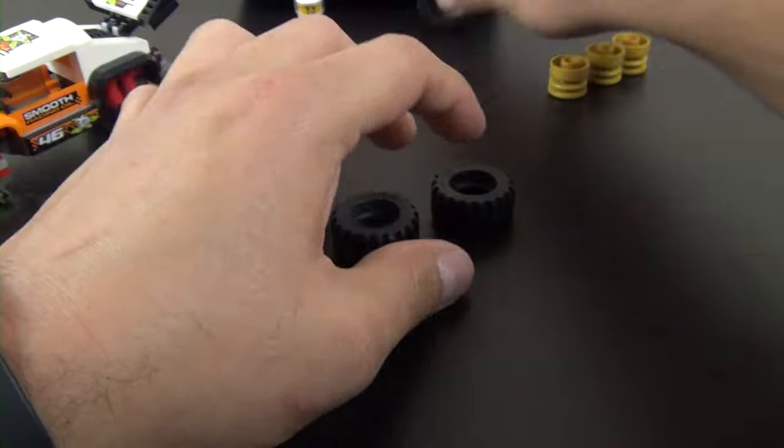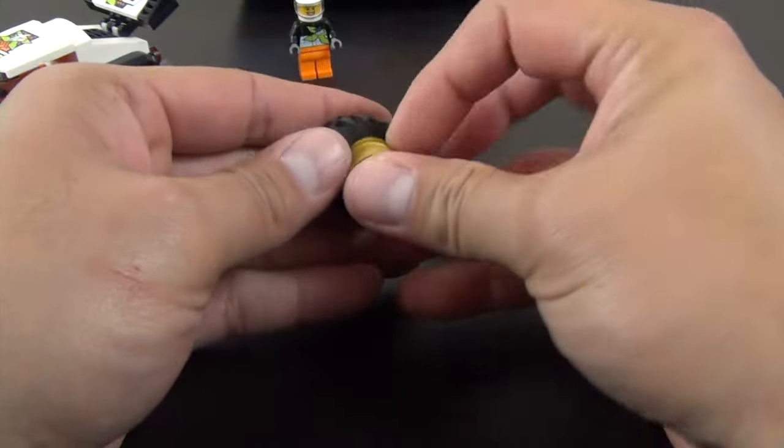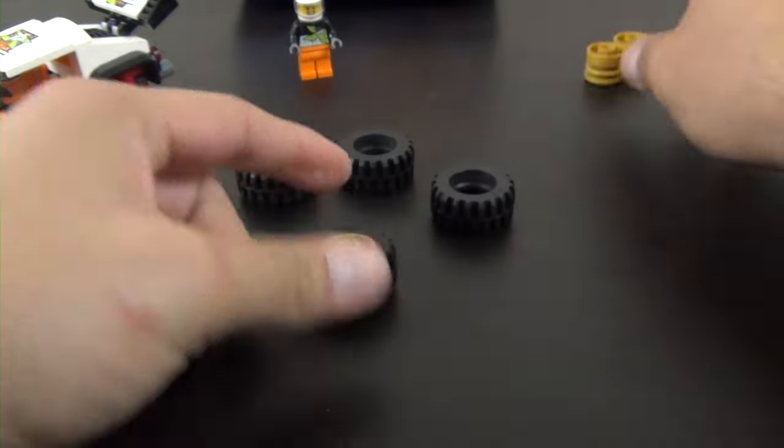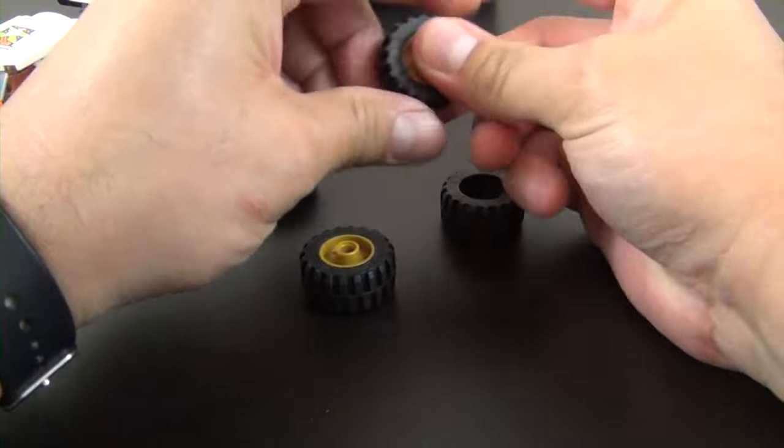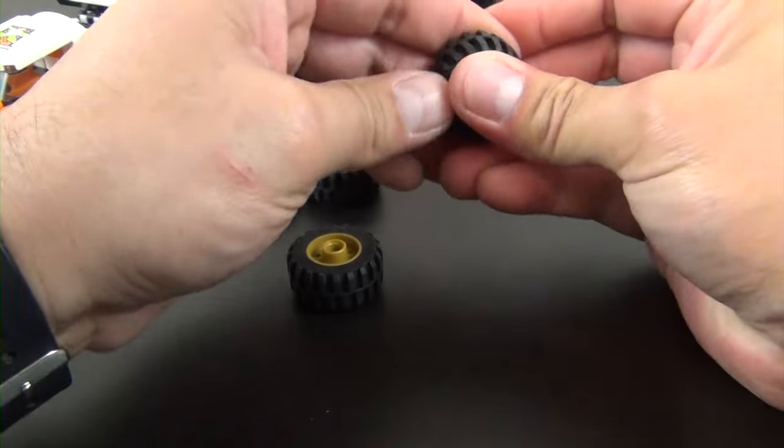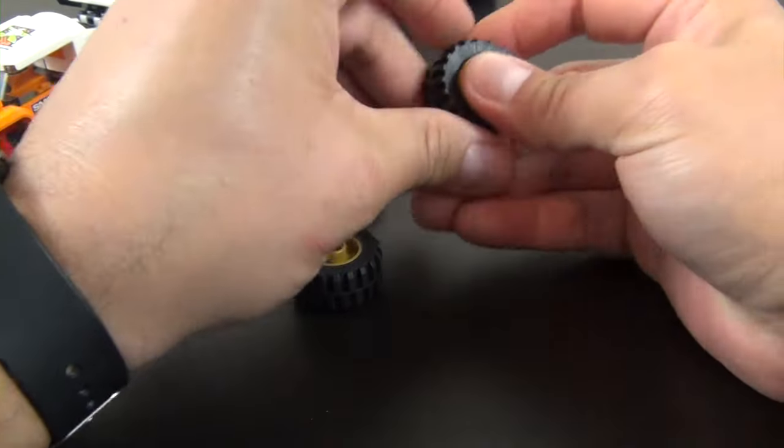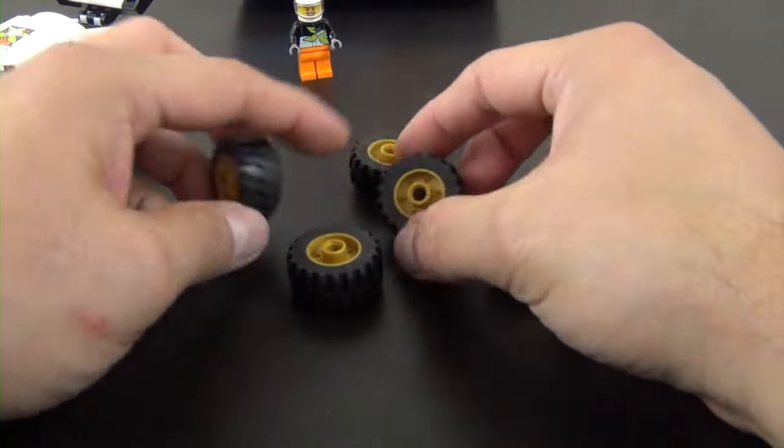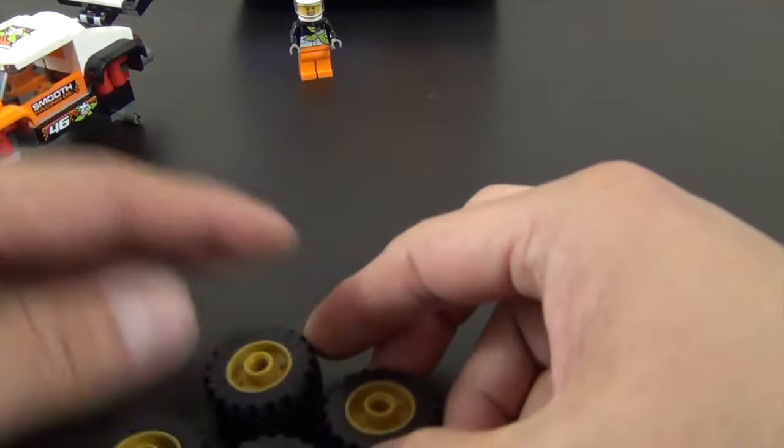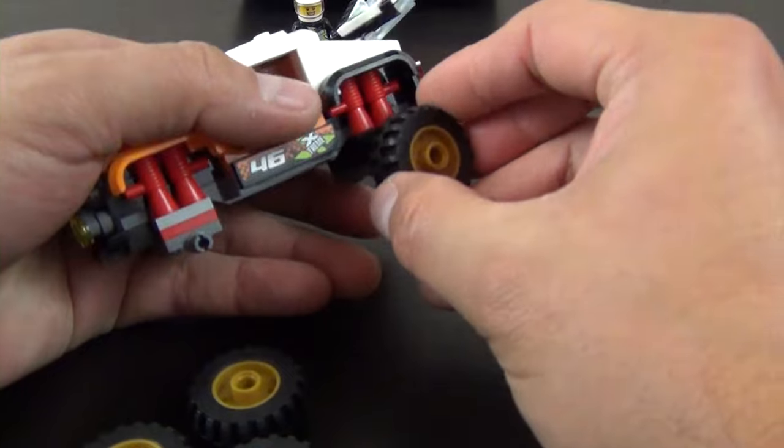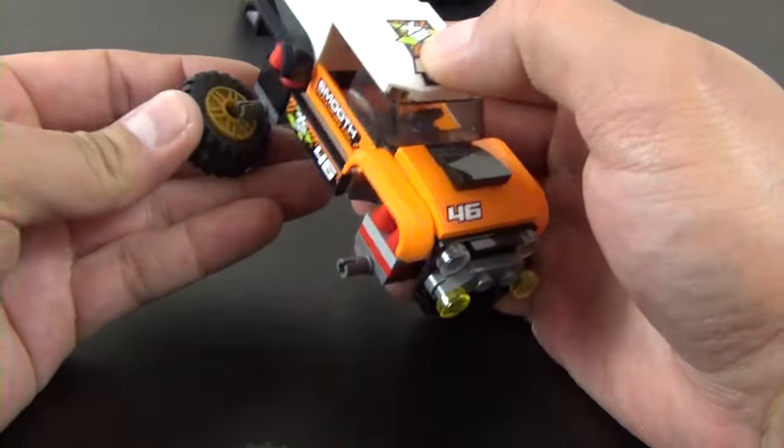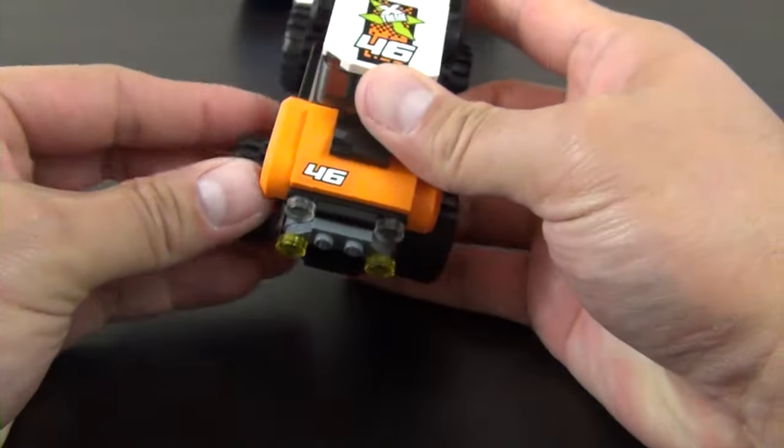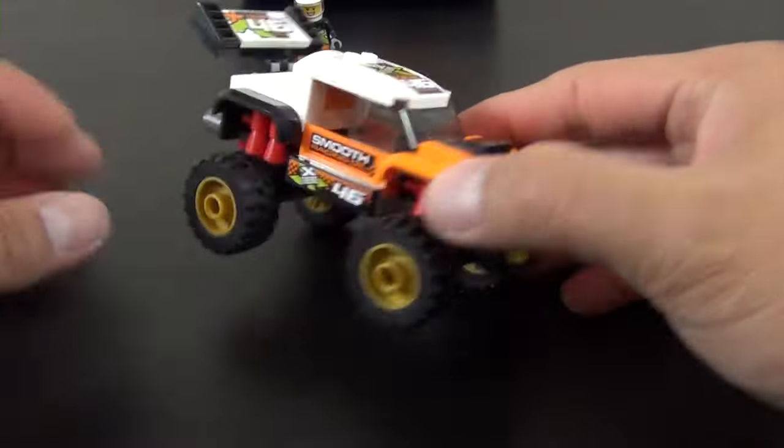The last thing we have are the four wheels and tires. These are kind of pearlescent gold wheels. Cool if they were orange and white or orange and black to kind of fit in with the color scheme, but we'll go with the gold ones. These simply pop on each one of these Technic pins. Bam, there it is.